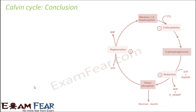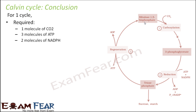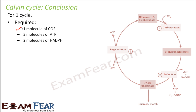Let us quickly conclude the Calvin cycle. In one Calvin cycle, only one molecule of CO2 can be fixed. How many molecules of ATP will be required? Total three molecules — because during the reduction phase, if one molecule of CO2 is fixed, two molecules of phosphoglycerate are formed. Each molecule needs one ATP, so two ATPs are needed in that step, and one more ATP is needed during regeneration — so three ATPs total per cycle.